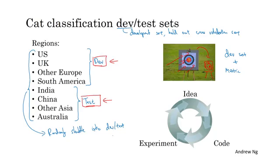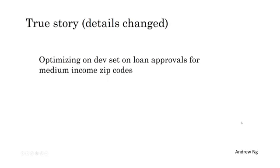Here's another example. This is actually a true story, but some details changed. I know a machine learning team that actually spent several months optimizing on a dev set which was comprised of loan approvals for medium income zip codes. The specific machine learning problem was given input x about a loan application, can you predict y, which is whether or not they'll repay the loan. This helps you decide whether or not to approve a loan.